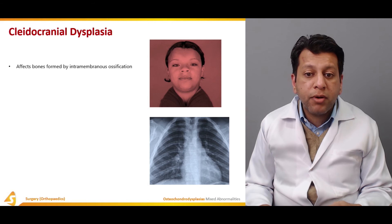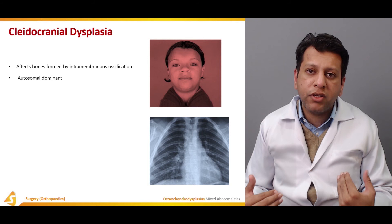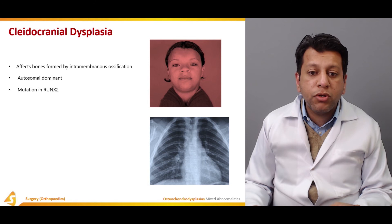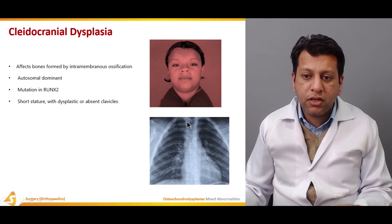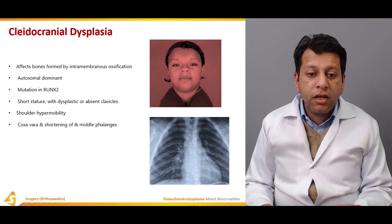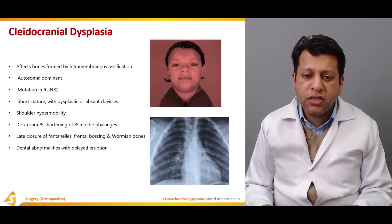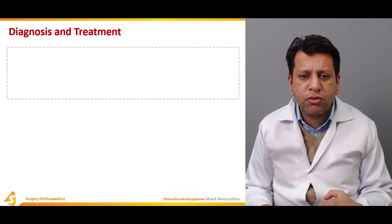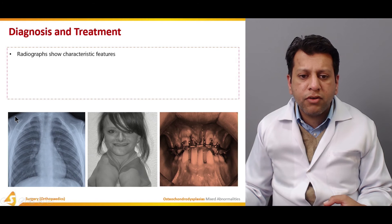Coming to the last of these three: cleidocranial dysplasia. It affects bones formed by intramembranous ossification — as you know, the facial bones and bones of the head and skull are formed by intramembranous ossification, which is why it mainly affects the facial and cranial bones. It has autosomal dominant inheritance with mutation in the RUNX2 gene, associated with short stature and dysplastic or absent clavicles. On X-ray, the clavicle is classically absent, and shoulder hypermobility is present. On the chest X-ray shown here, you can see the shoulder joint has no clavicle forming the sternoclavicular junction.